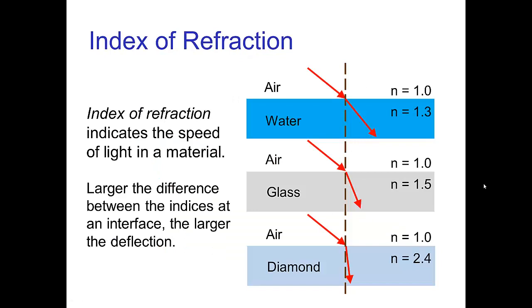If we measure the speed of light in different materials, we can characterize that by what's called the index of refraction. The larger the index of refraction, the slower light travels in that material. For example: water is 1.3, glass is 1.5, and diamond is very high at 2.4. The amount of deflection we get from refraction depends on the difference between the two indices of refraction from one material on one side of the surface to the other.